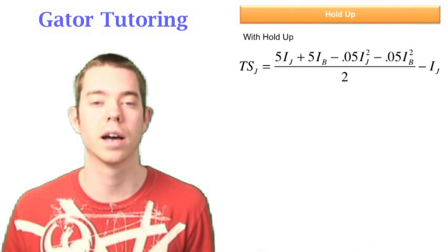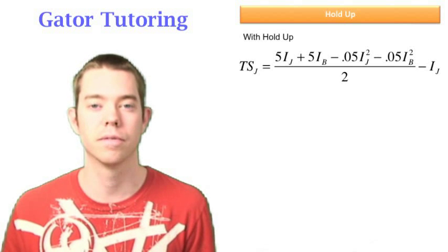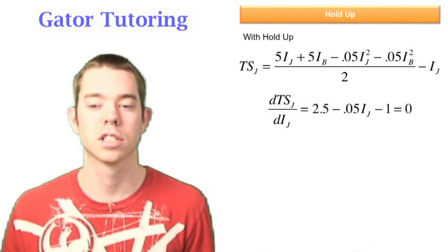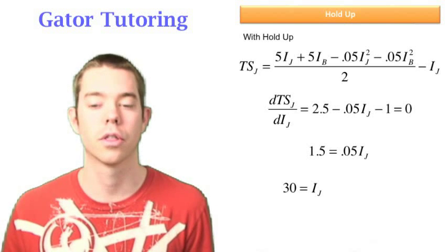So with holdup, we're going to divide, for one of the people, we're going to divide the value by two, but not their investment. We can simplify this and take the derivative with respect to ij and solve for ij, in this case, to be equal to 30.